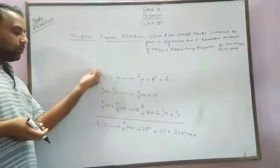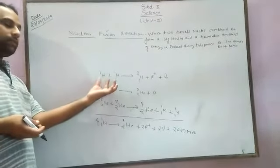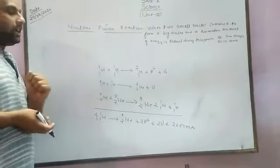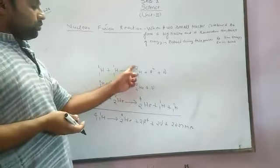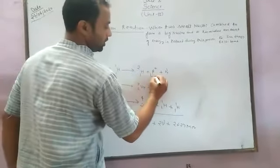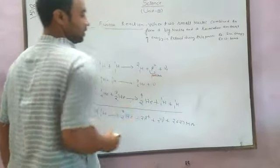1H1 plus 1H1, these are isotopes of hydrogen. When these combine, they form 1H2 plus beta-plus. What is beta-plus? This is a positron.